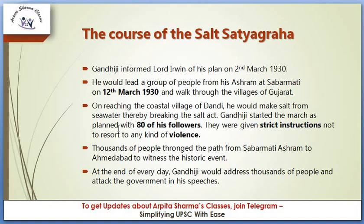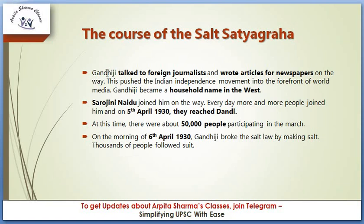Gandhiji started the march with 80 of his followers, who were given strict instructions not to resort to any kind of violence. Thousands of people thronged the path from Sabarmati to Ahmedabad to witness the historic event. At the end of every day, Gandhiji would address thousands of people and criticize the government in his speeches. Gandhiji also talked to foreign journalists and wrote articles for newspapers on the way, pushing the Indian independence movement into the forefront of world media and becoming a household name in the west.